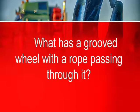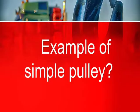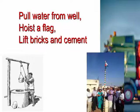What has a grooved wheel with a rope passing through it? Simple pulley. Examples of simple pulley: pull water from a well, hoist a flag, and lift bricks and cement.